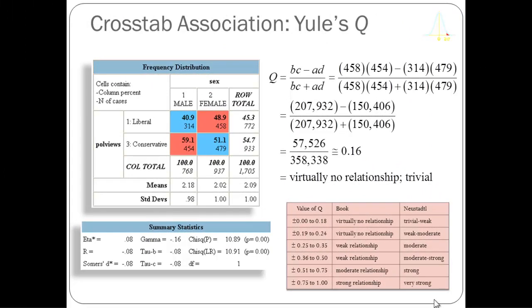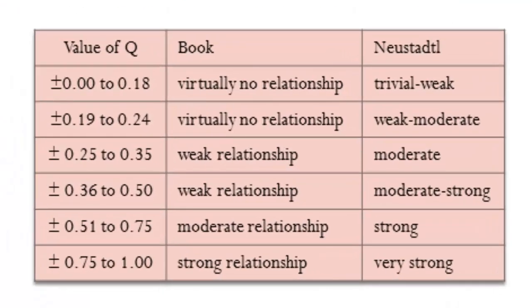Early on we looked at the relationship between gender and political ideology. I've redone the table, dropping out the moderates to create a two-by-two table, since Yule's Q requires that. We saw most gender differences taking place in the liberal and moderate categories, so I'm focusing on liberalism versus conservatism. We had a chi-square statistic leading us to reject the null hypothesis — a statistically significant relationship. There's about an eight percentage point difference between men and women.